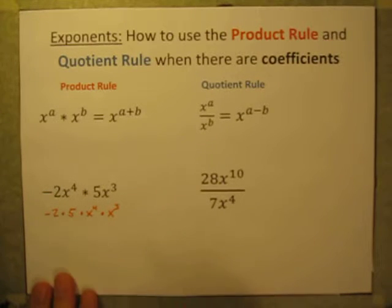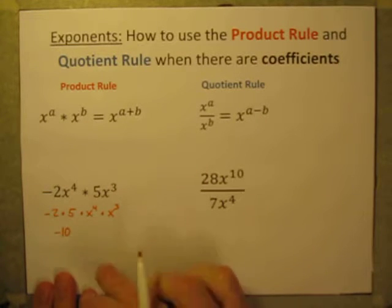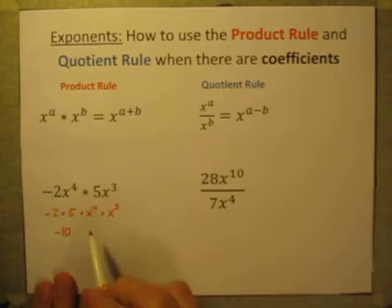I just have negative 2 times 5, which of course is simply negative 10. And now how am I going to handle those two variables, x to the 4th power times x to the 3rd power?